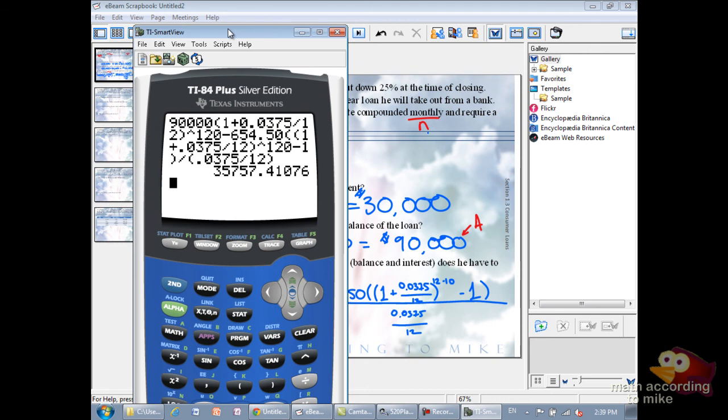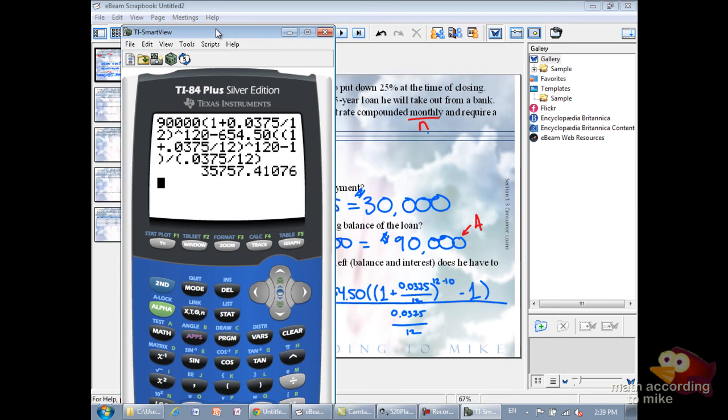Let me make it larger so it's easier to see. Now, here's the deal. For your calculator, for that calculator there, hit second and enter. And it recopies everything so you don't have to retype the whole thing. That way you can just highlight what you need to do and either insert or delete. So what this means is after 10 years, he has to pay off $35,757.41 approximately.